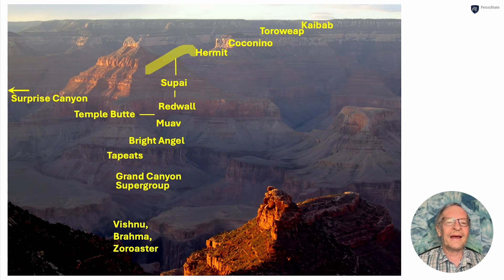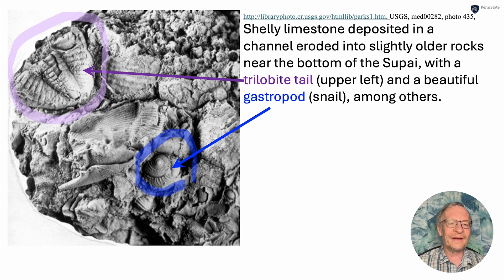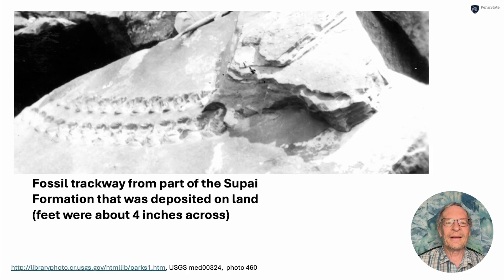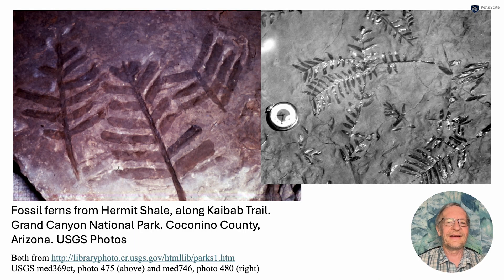Above the Redwall is the Supai. At the bottom of the Supai you may find some limestones with neat fossils like a trilobite tail or a beautiful snail — a gastropod. Higher in the Supai you find sediments deposited on land, like this fossil trackway. Above the Supai is the Hermit. A lot of these are floodplain deposits, and in floodplains you often find fern fossils like these beauties found along the Kaibab Trail in these USGS samples.